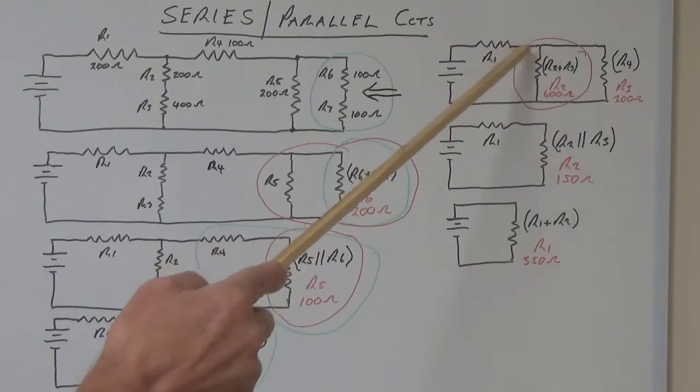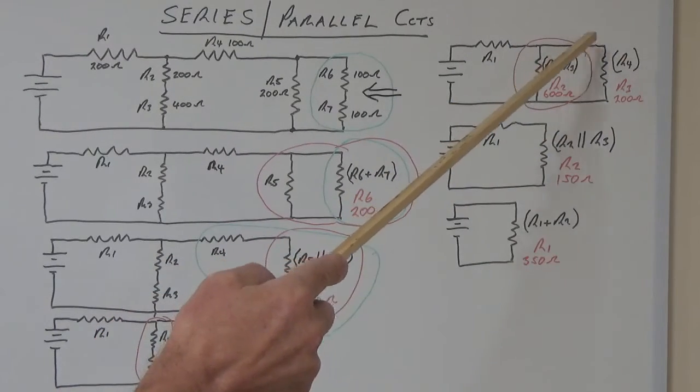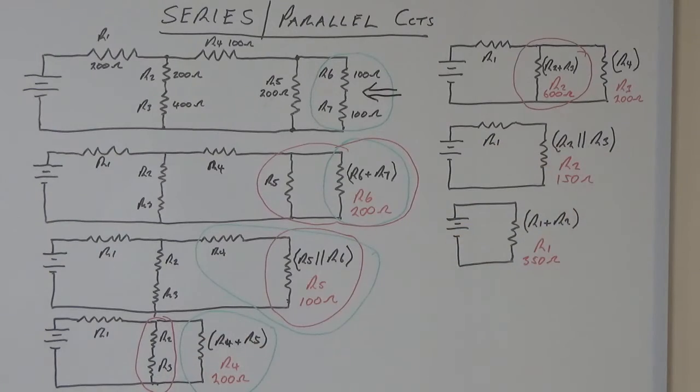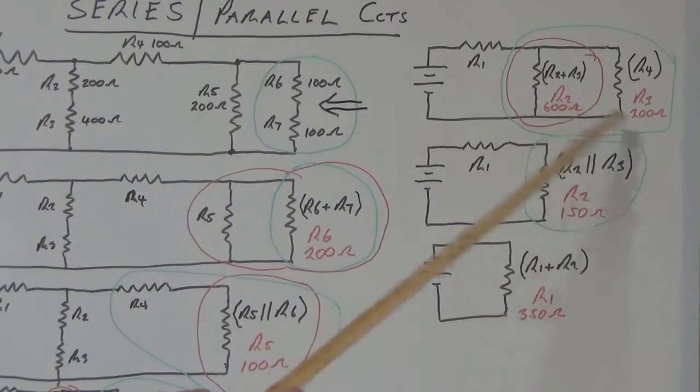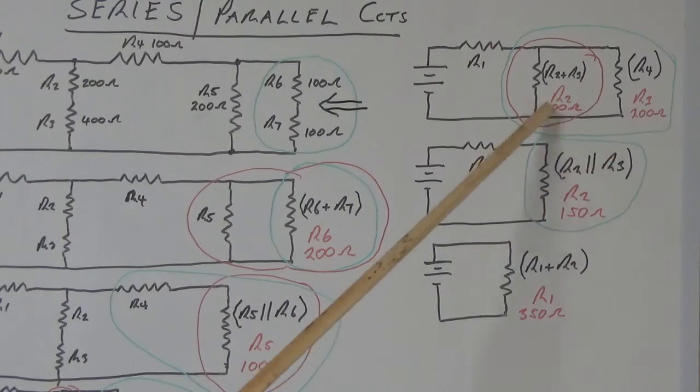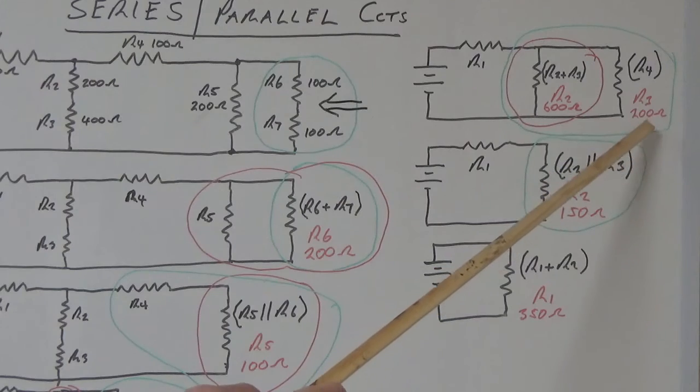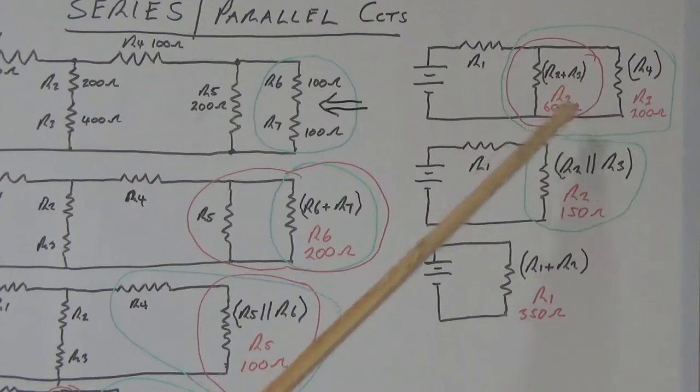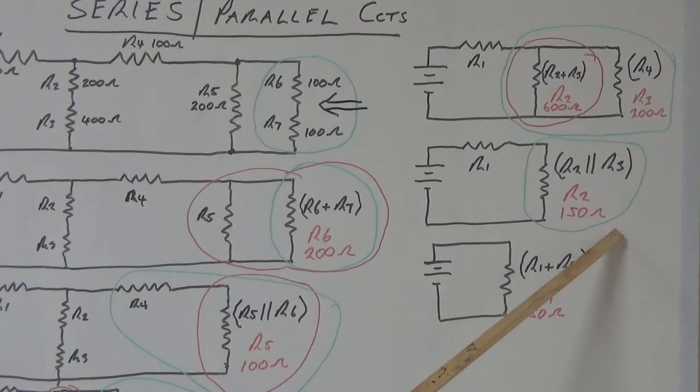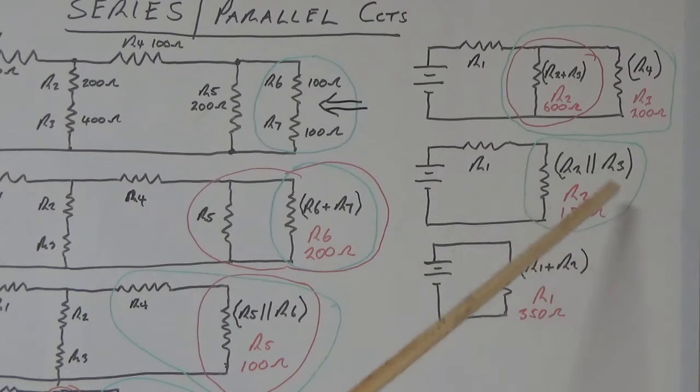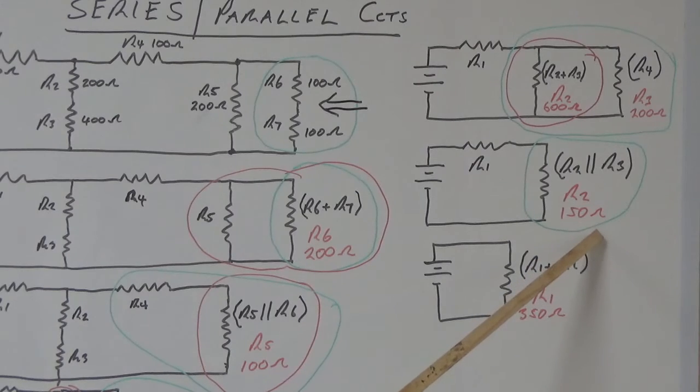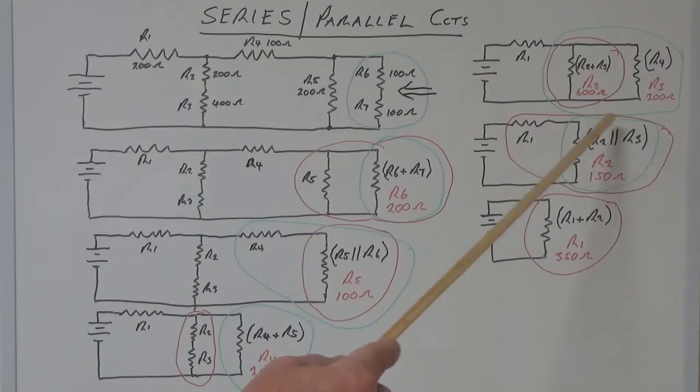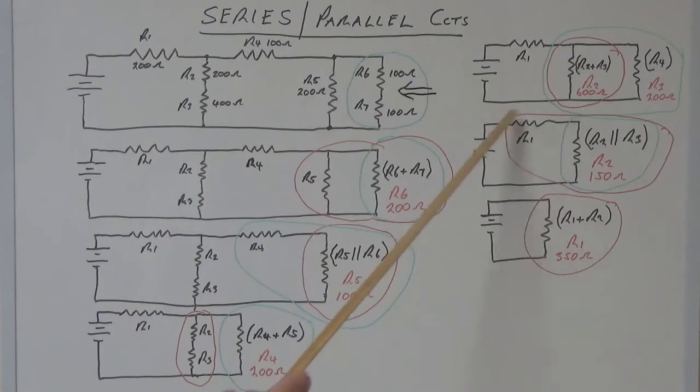The next thing we need to do is combine these two resistors in parallel. We've got the new R2 and the new R3. You've got 600 ohms in parallel with 200 ohms. Because there's two resistors, you can use the formula we used earlier, which is a product over the sum, and you can find out the new value, which is 150 ohms.